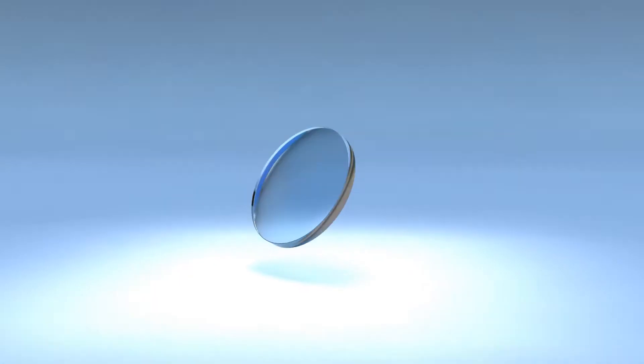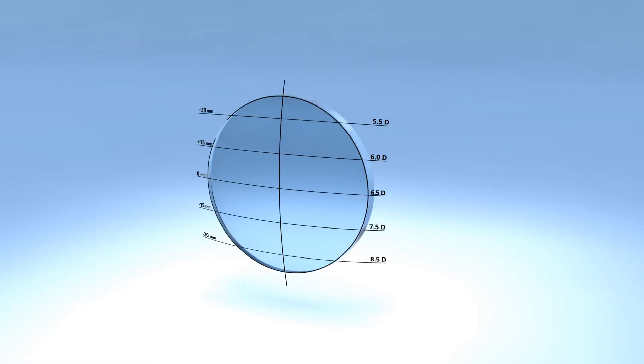The camber lens blank improves on the spherical lens blank by offering a continuously increasing base curve to better match the different powers in each zone of the finished progressive lens.